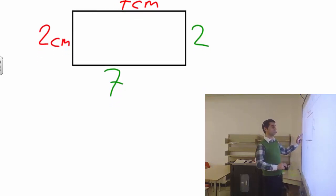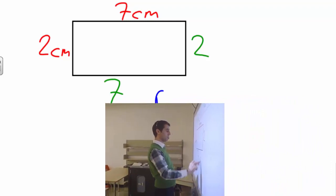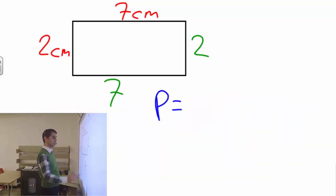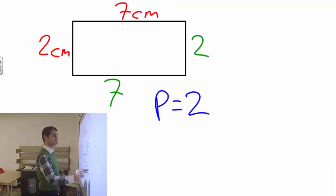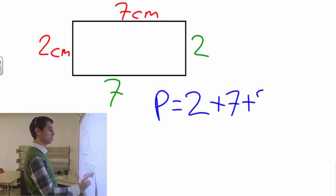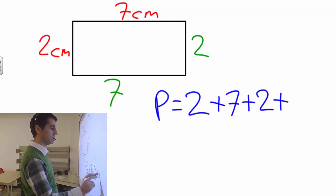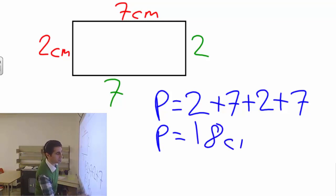Let's use a different color here. Perimeter equals 2... I'm going to start from here and go that way. 2 plus 7 plus 2 plus 7. The perimeter will be 18. Don't forget the unit: centimeters.